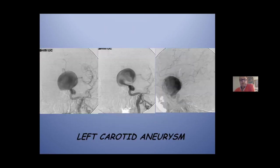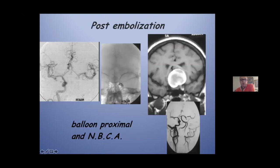This is an example of treatment with sacrifice using balloon test — the giant aneurysm in AP view, lateral view, balloon. I prefer to place the balloon before, no trapping, only before. Because with the trapping technique, sometimes you don't have the space to place the balloon in this part. Only you put here, you have thrombus. I completed the embolization with glue — the carotid in this map.